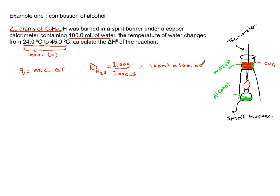I have 100 grams multiplied by heat capacity of the water, which is 4.18 joules per gram per degree Celsius. Now what is the change in temperature? It's 45 subtract 24, so you get 21 degrees Celsius.